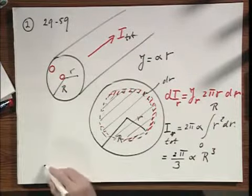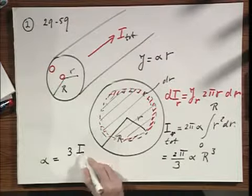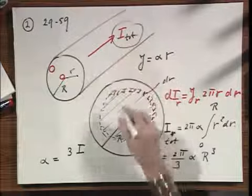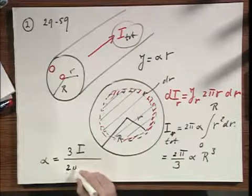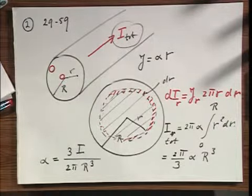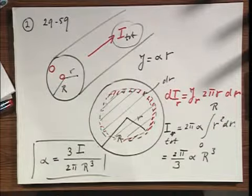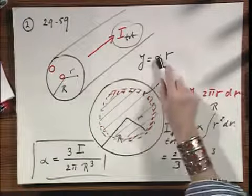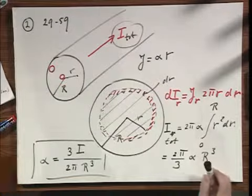And so you can write that differently if you want to. You can say that alpha therefore is 3I total, the total current through the cross section, divided by 2π R cubed. So this is not too difficult to get the current, the relation between the current and alpha.